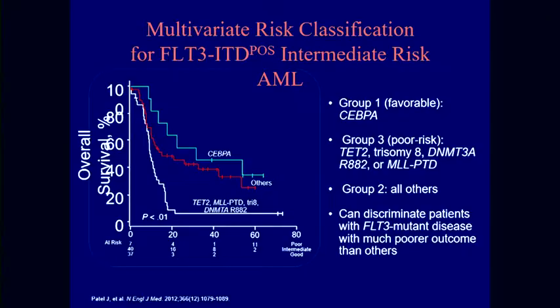People then recognized that the AML genome is more complex than just yes or no on one mutation. This is work done by Ross Levine and others based on a big ECOG clinical trial. The point is that the company FLT3 keeps can influence prognosis. If FLT3 co-occurs with root mutations like TET2 or DNMT3A, people do really poorly. If they have a favorable mutation like the transcription factor CEBPA, they do a little bit better — but even then, people with FLT3 mutations didn't do all that well on standard treatment.